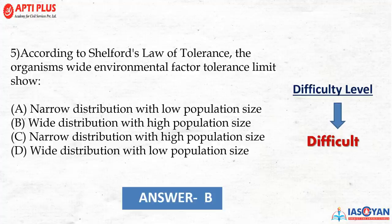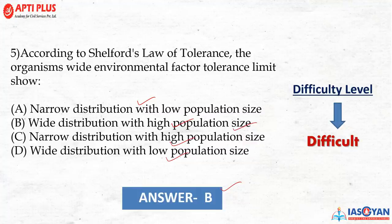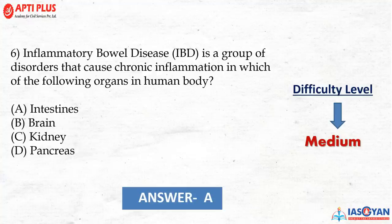Question 5: According to Shelford's Law of Tolerance, organisms with a wide environmental factor tolerance limit show wide distribution with high population size. The correct answer is B — wide distributions with high population size. This is a difficult question, but if you have read the NCERT, you can answer it easily.